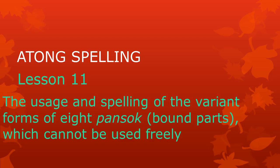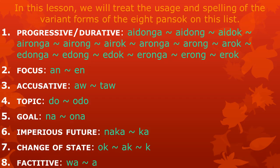Welcome to Atong Spelling Lesson 11, the usage and spelling of the variant forms of eight pansock bound parts which cannot be used freely. In this lesson, we will treat the usage and spelling of the variant forms of eight pansock on this list. They are the progressive, the focus, the accusative, the topic, the goal, the imperious future, the change of state, and the factative.